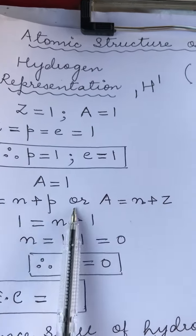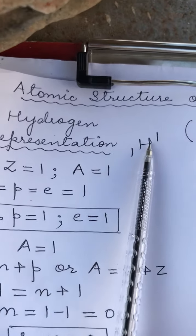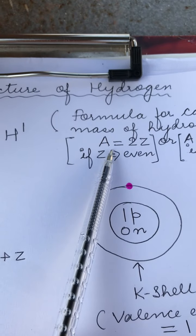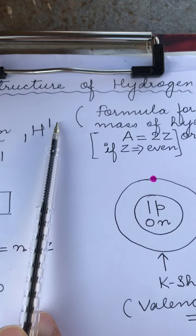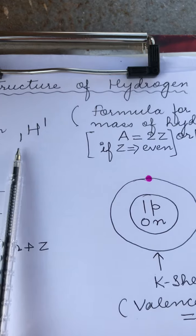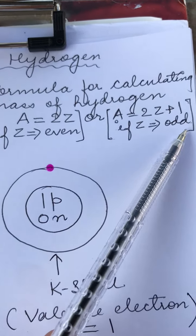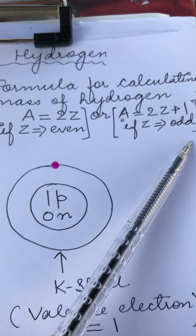Now since A is 1, though for calculating the masses as we have already done, there are two formulas which are followed. Either A is equal to 2Z, that means the mass is either 2 times the atomic number if the atomic number is even, and it is equal to 2Z plus 1 if it is an odd number.